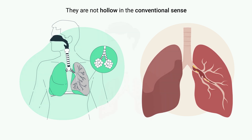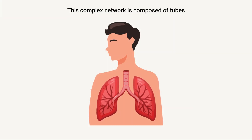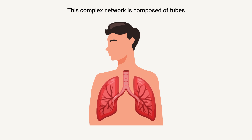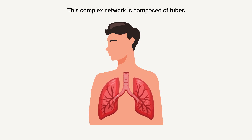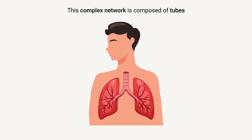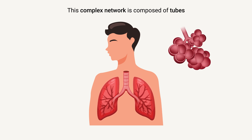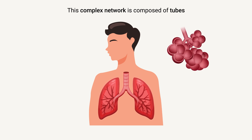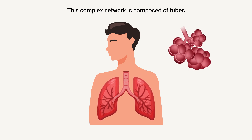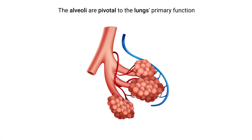The architecture of the lungs is comparable to a highly intricate and detailed branching system, similar to the branches of a tree. This complex network is composed of tubes known as bronchi and bronchioles, which progressively decrease in size as they branch out throughout the lung tissue.